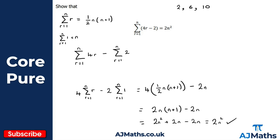That was quite a straightforward example — not massively challenging, but it explored the key ideas of linearity: first splitting the summation of (4r minus 2) into the summation of 4r minus the summation of 2, then applying linearity again to factor out the 4 and the 2. Once you do that, the result becomes much easier to work with. That brings us to the end of this video. In the next video, we'll look at the sum of the squares and cubes of the first n natural numbers.